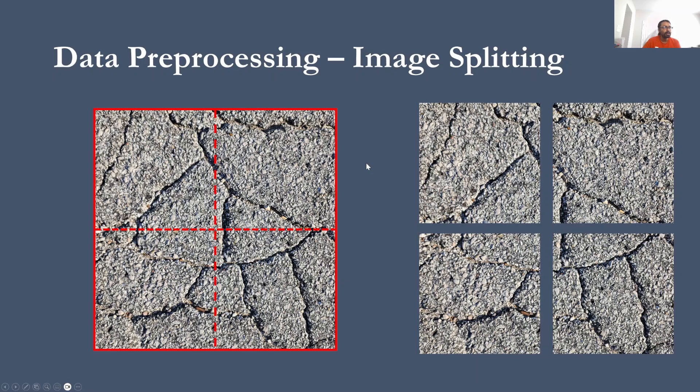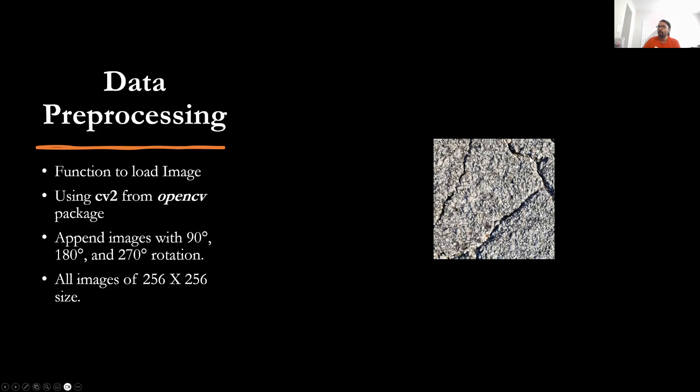So after splitting the images and having a lot more images in my database now, next thing was to input the data into the Python environment. And I did that by using CV2 function from the OpenCV Python package. So once I had images in Python, I also increased the number of images I had basically by also rotating those images and every rotation can be treated as a new image file for the model.